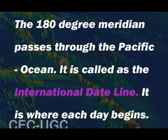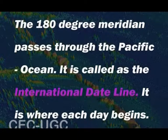The time zones of the world are also related to the Pacific Ocean. The 180-degree meridian passes through the Pacific Ocean and is called the international dateline — it is where each day begins.